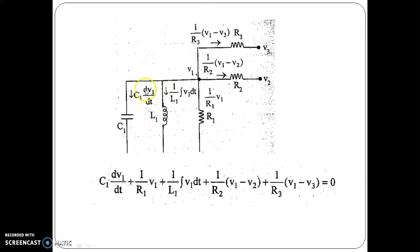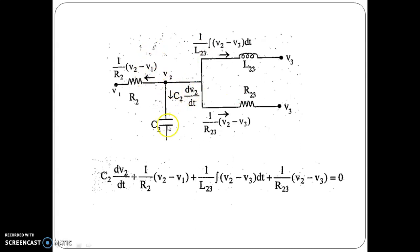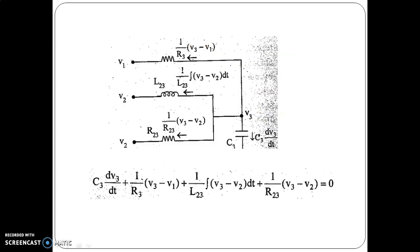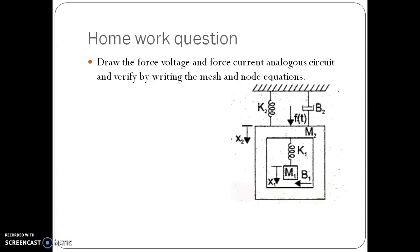The node equations are written in terms of voltage. Node 1: C1·dv1/dt + v1/R1 + (1/L1)∫v1 dt + (1/R2)(v1 − v2) + (1/R3)(v1 − v3) = 0. Node 2: C2·dv2/dt + (v2 − v1)/R2 + (1/L23)∫(v2 − v3)dt + (1/R23)(v2 − v3) = 0. As a homework, find the force-voltage and force-current analogous circuits of the given system and write the mesh analog equations.